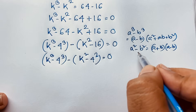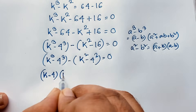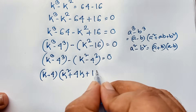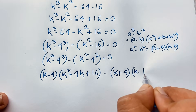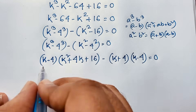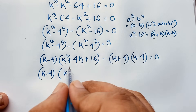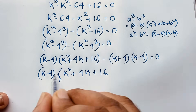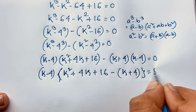Applying the first formula gives k minus 4 times k squared plus 4k plus 16. Applying the second formula to k squared minus 16 gives k plus 4 times k minus 4. So we have: k minus 4 times k squared plus 4k plus 16, minus k plus 4 times k minus 4, is equal to 0.